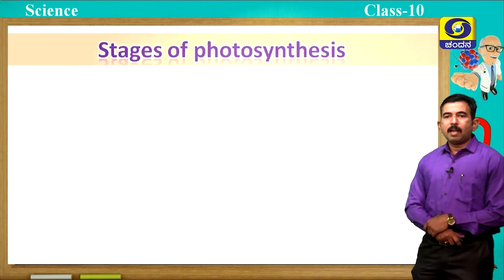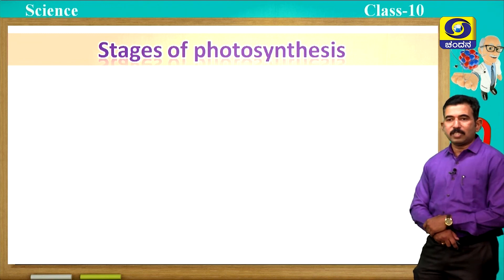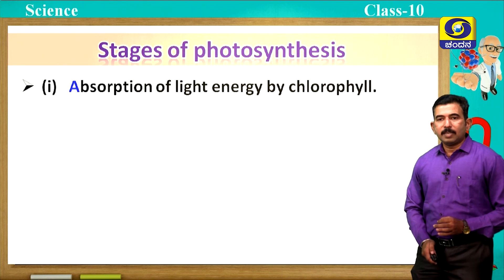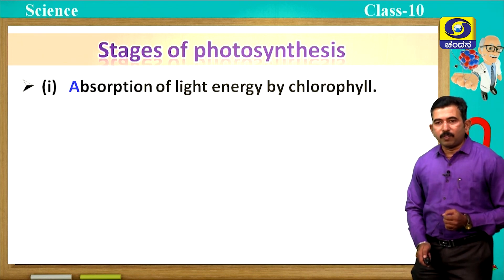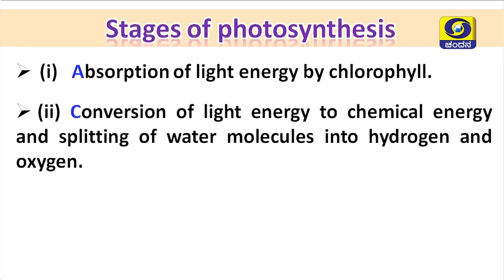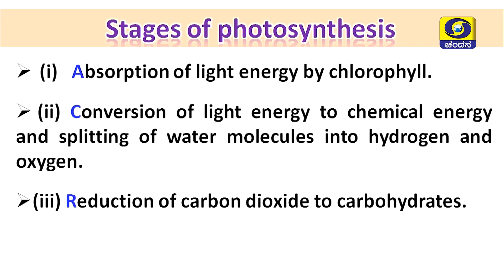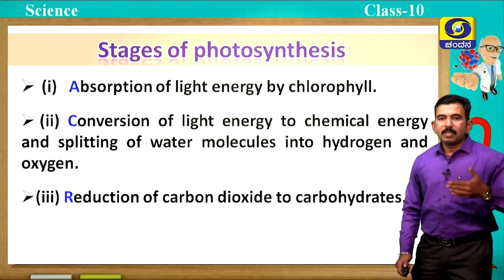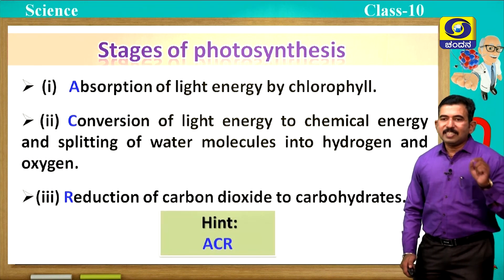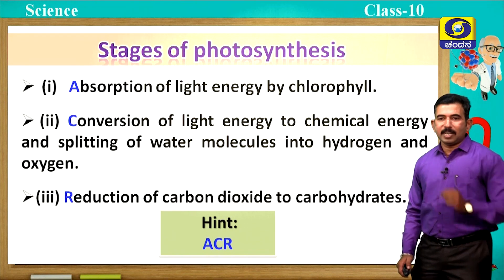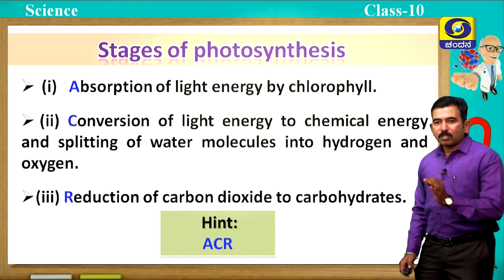Next let us discuss about the events or stages of photosynthesis. During photosynthesis, there are mainly three events taking place. First is the absorption of light energy by chlorophyll. Second is the conversion of light energy to chemical energy by splitting of water molecules to hydrogen and oxygen. Third is the reduction of carbon dioxide to carbohydrates. I want to give you a small hint to remember these three stages — that is ACR: A means absorption of light energy, C means conversion of light energy to chemical energy, and R means reduction of carbon dioxide to carbohydrates.